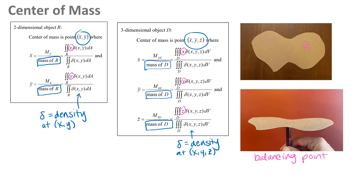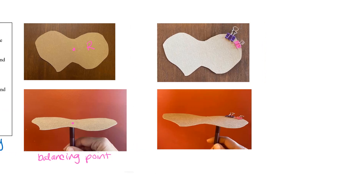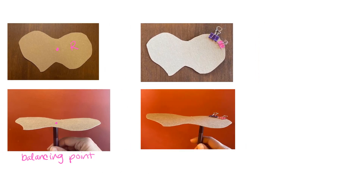My cardboard has uniform density because it's the same material throughout. For uniform density, the center of mass is really the geometric center. I then took the same piece of cardboard and added a couple of binder clips to one edge, meaning that edge has more mass. That shifts where the center of mass — the balancing point — is. When I balanced it on the pen again, you can see that center of mass has shifted a little bit.